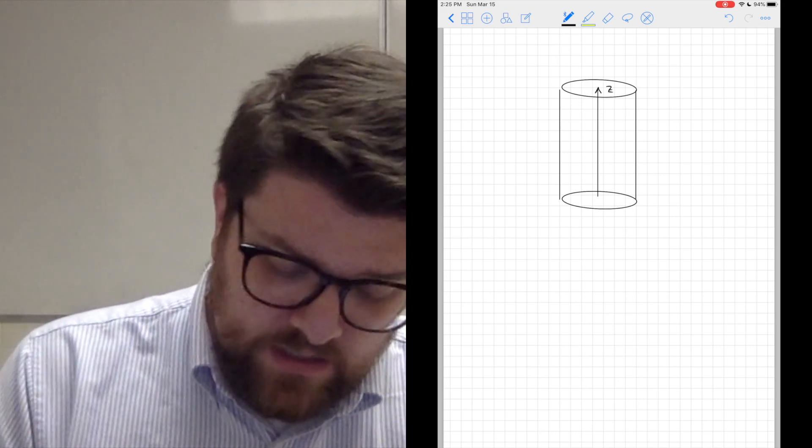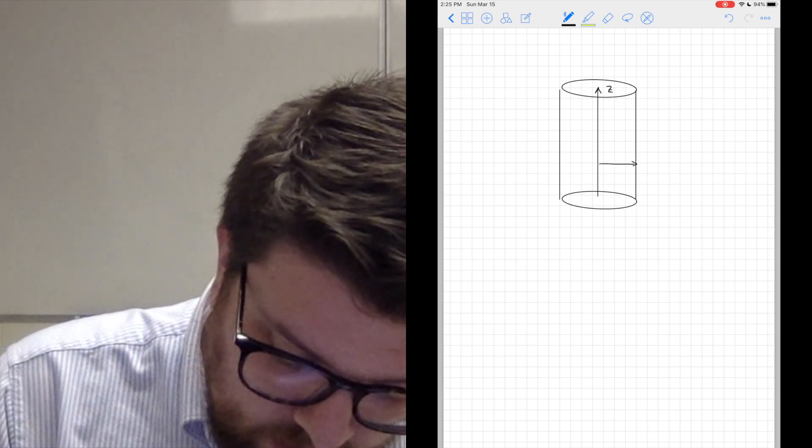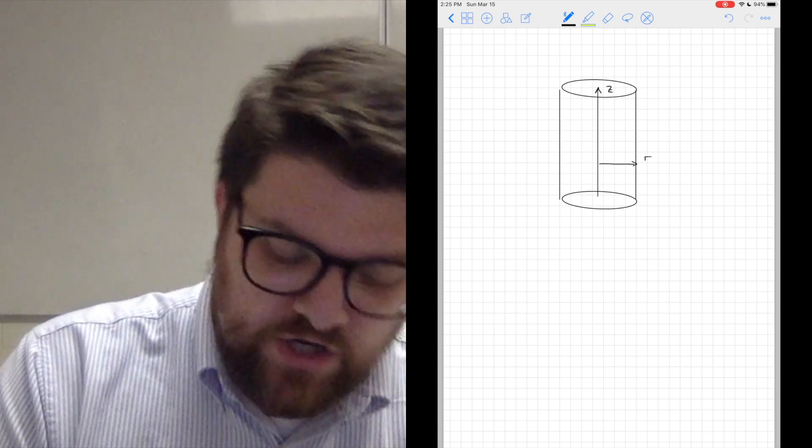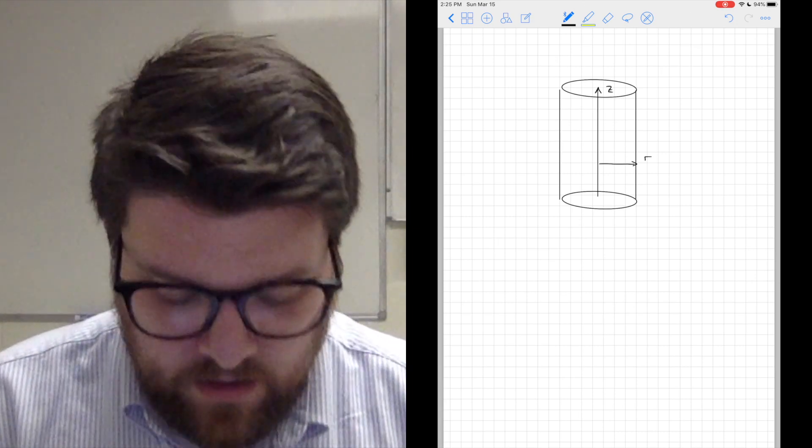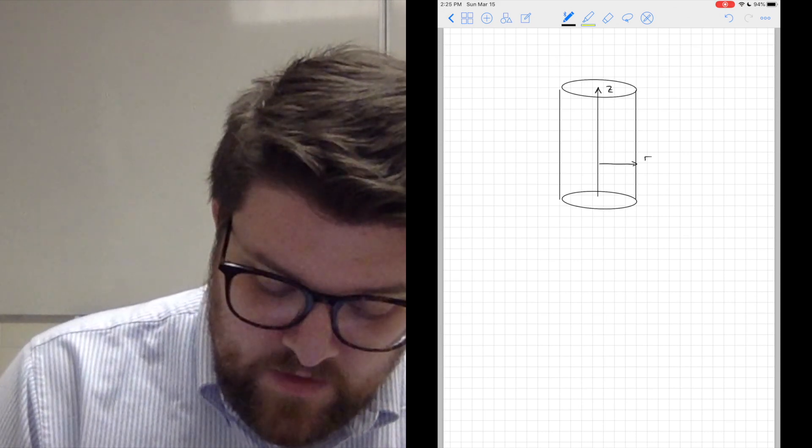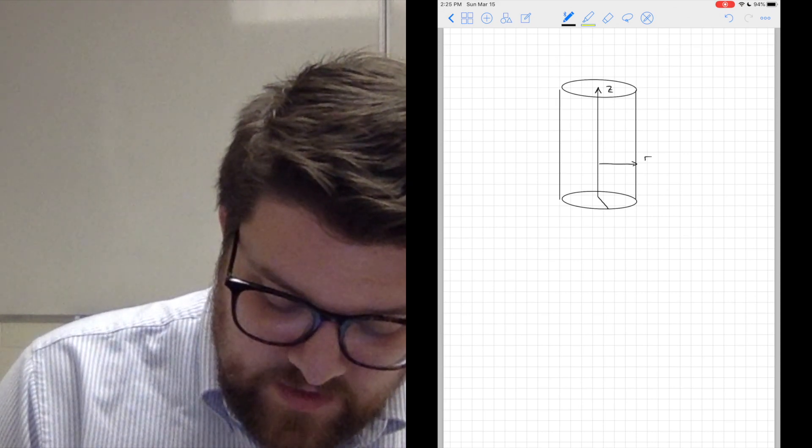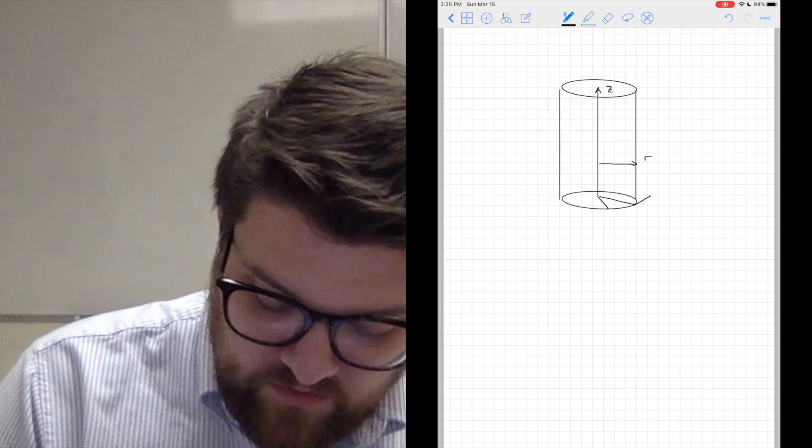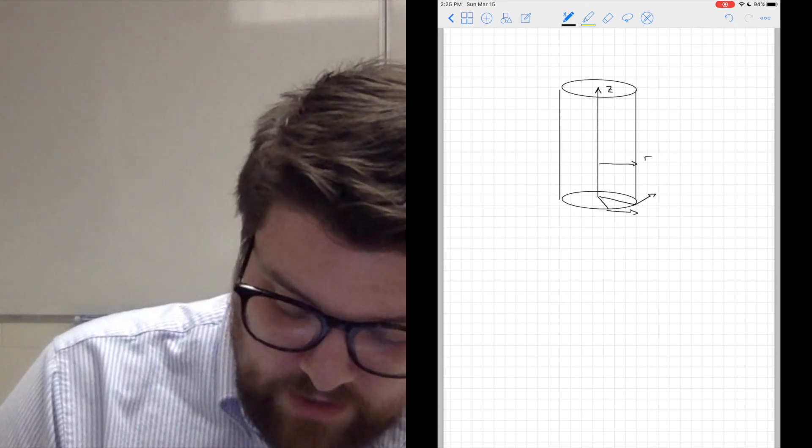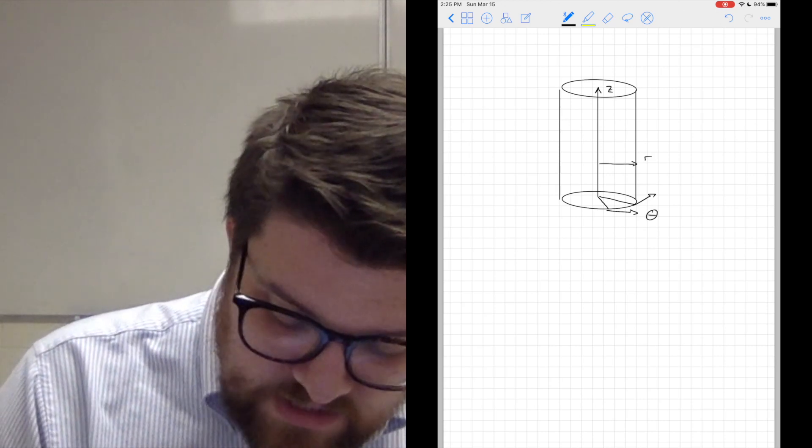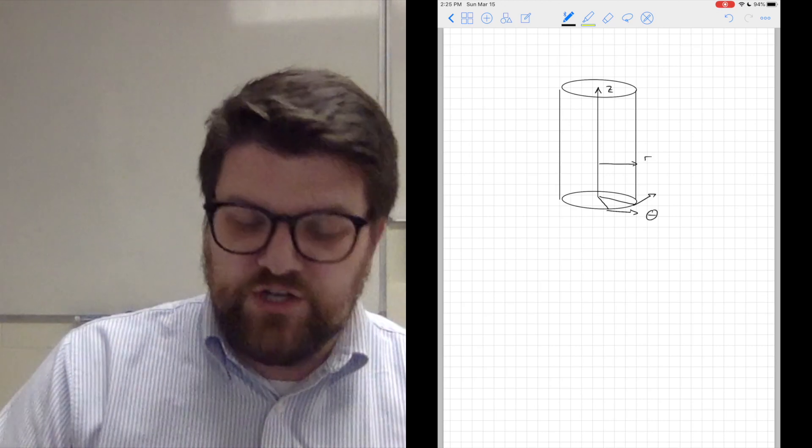The two big components we have are R, which is our radial component—how far from the center of our cylinder are we? And then theta, which tells me about my direction based on my rotation around the cylinder. So that is our theta direction.